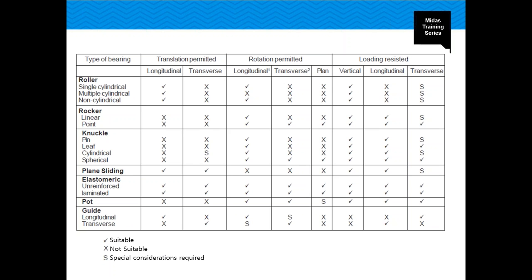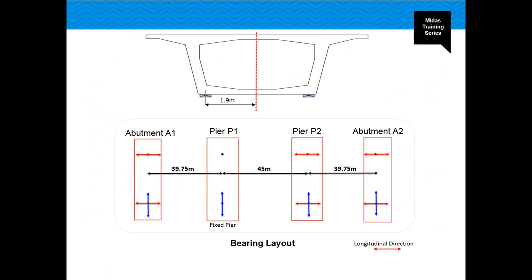Based on translation permitted, rotation, and loading resisted by the bearings, various bearings are suitable for different configurations. Tick marks show suitable bearings for these configurations, and 'S' stands for special considerations required. For example, a plane sliding bearing for transverse loading resistance requires special considerations. This comparison table helps select the appropriate bearing type.